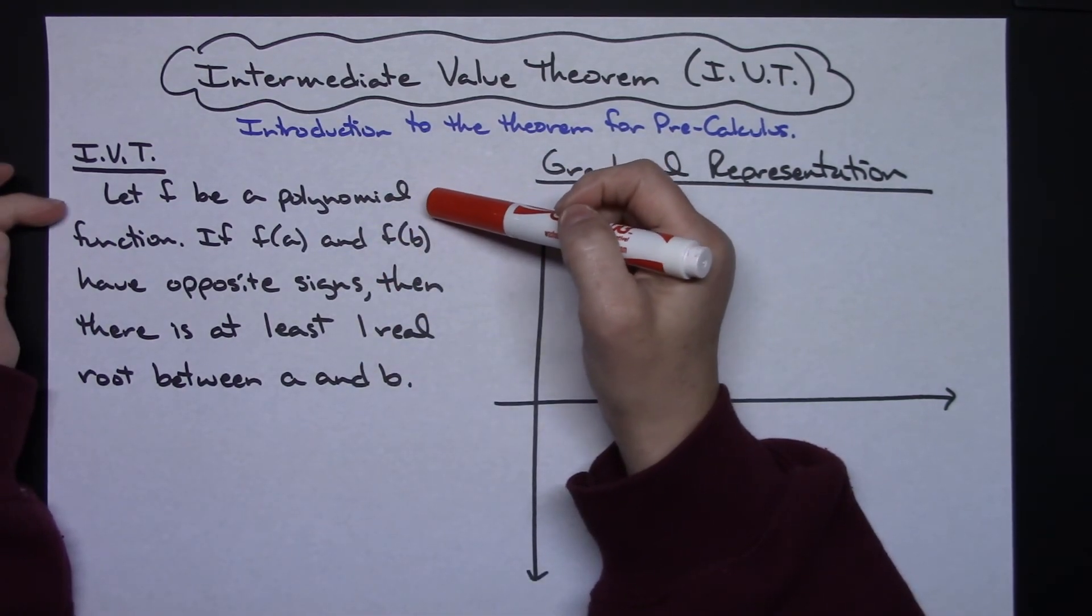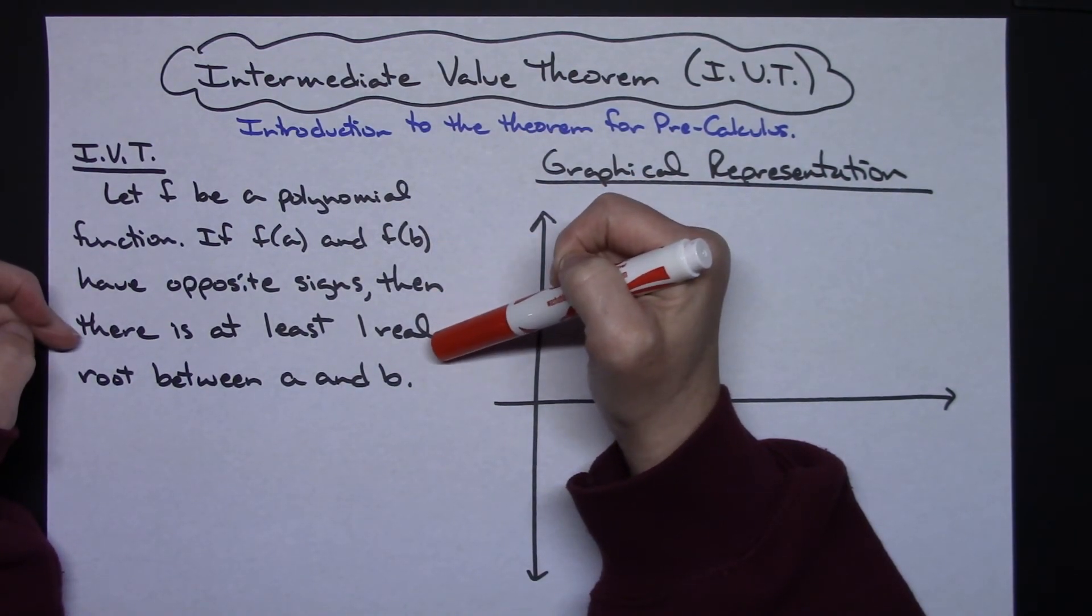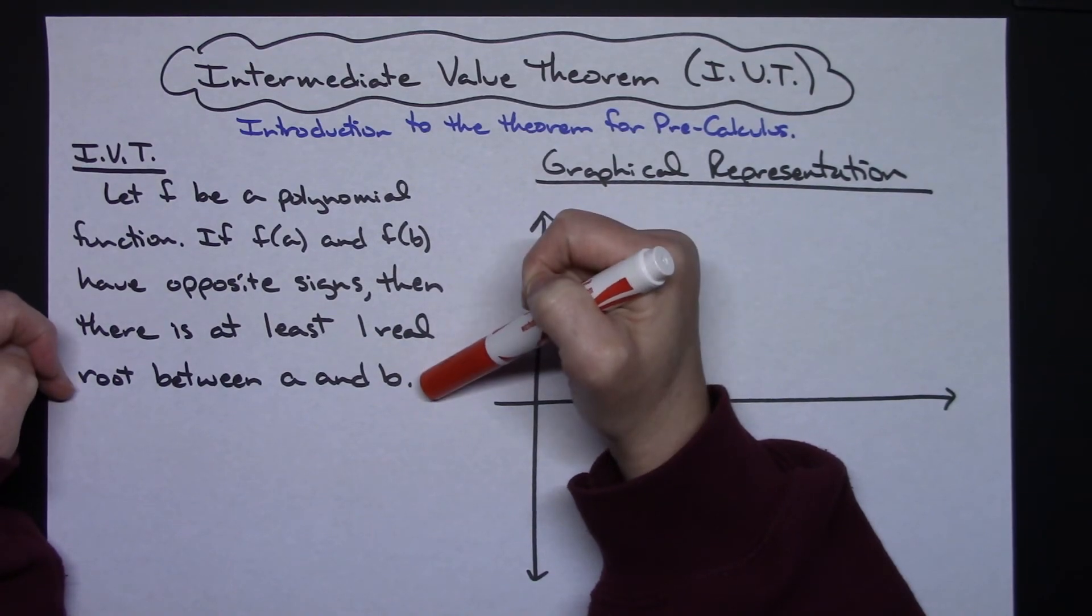We're going to let F be a polynomial function. If F of A and F of B have opposite signs, then there is at least one real root between A and B.